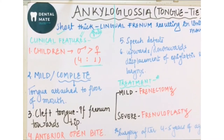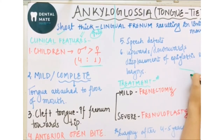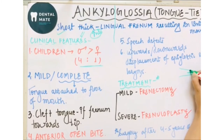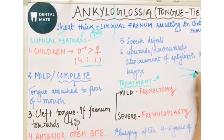Sometimes in ankyloglossia, the lingual frenum is attached to the tip of the tongue. Because of this, it may also cause a cleft of the tongue.